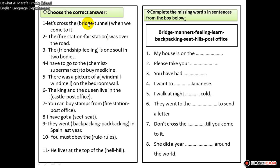Now we choose the correct answer by reading the sentences and picking one of the two words in brackets. Number one: let's cross the bridge — of course we can cross the bridge. Number two: fire station is correctly spelled, not 'fair station.'